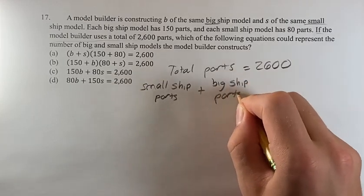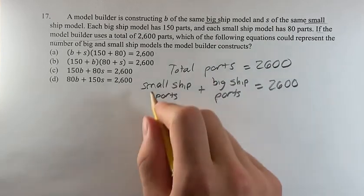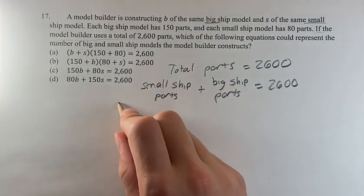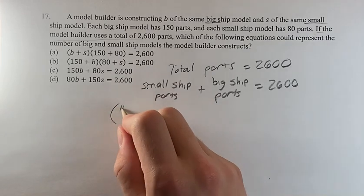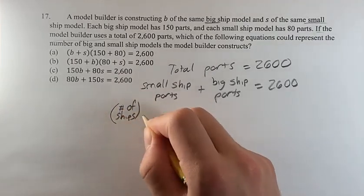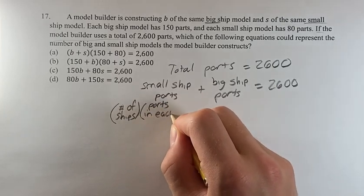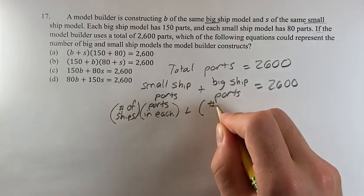There are no other options to add up to the 2,600, so it's just going to be those two. So how can these be delineated? Well, the small ships we can think of as the number of small ships times the parts in each, and the same thing with the big ships.